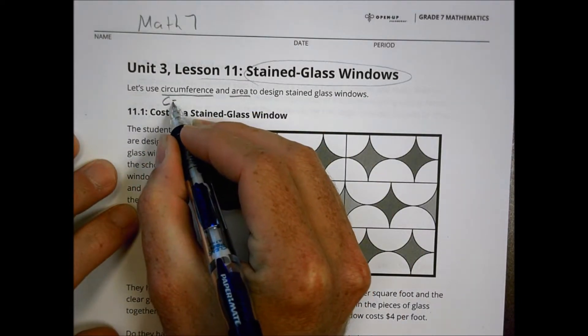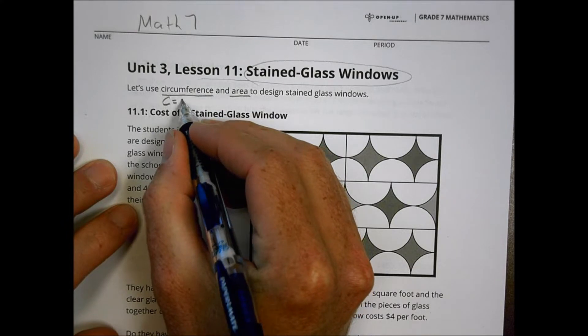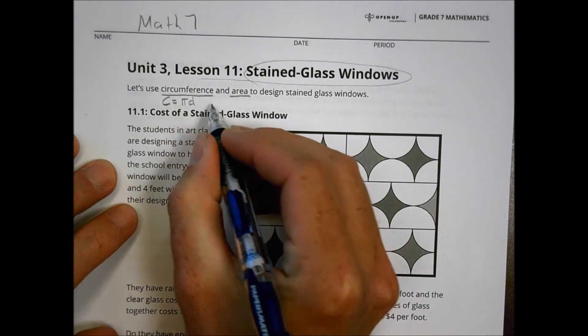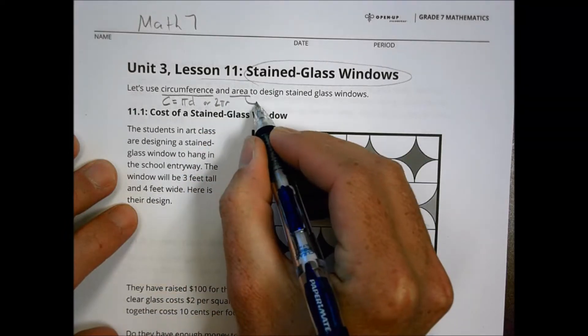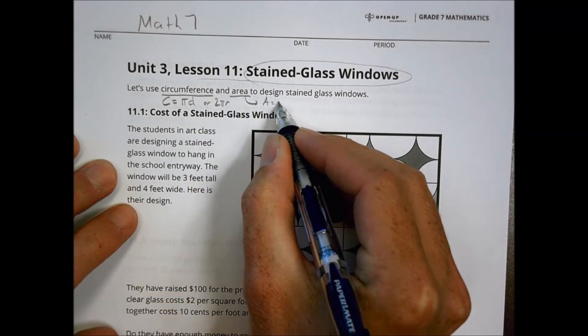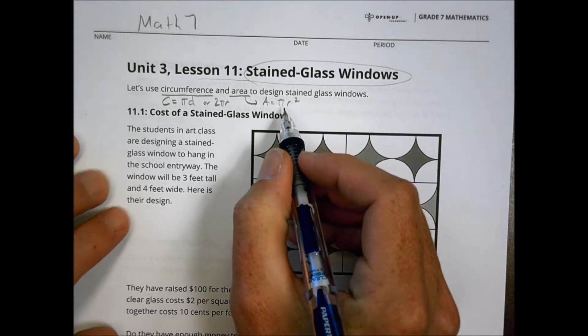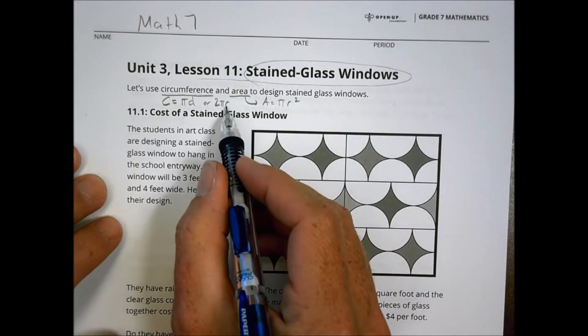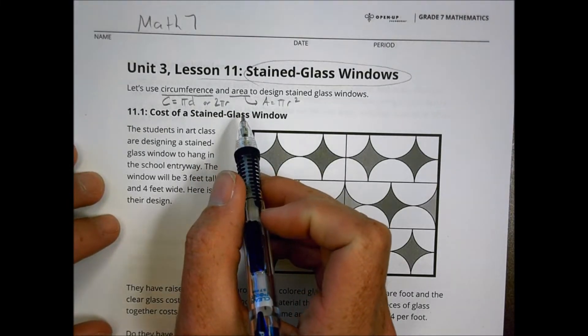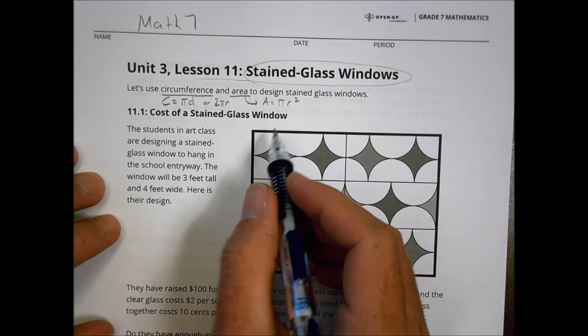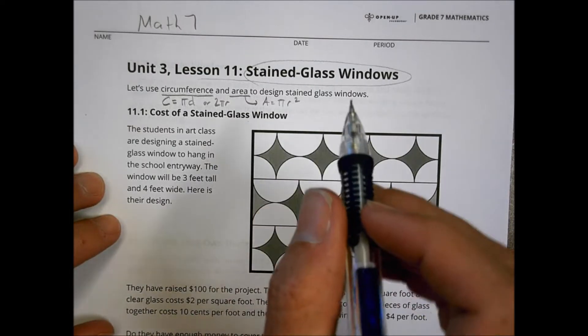Again, our circumference we said was circumference equals pi times the diameter, or it could equal 2 pi r. But our area, we've decided was equal to pi r squared. And so for all of these formulas here, we decided that if we could determine what a radius was or a diameter length, we'd be able to use that information in order to figure out how long or how wide an object might be.